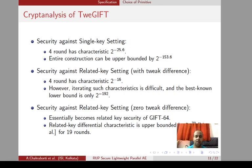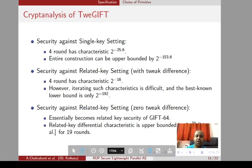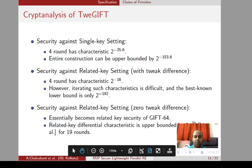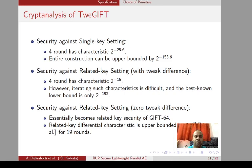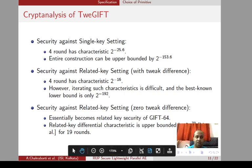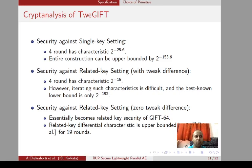TweGIFT is not exactly the same as GIFT-64 — it adds some additional structure, so we need to do some additional cryptanalysis on TweGIFT. In the single-key setting with zero tweak difference, it is exactly the same as GIFT-64 and we have sufficient results there. Since we are using a nonce-dependent key in the AE modes, we can prove the security of LOTUS and LOCUS in the ideal cipher model, and we need to analyze the related-key cryptanalysis of TweGIFT.